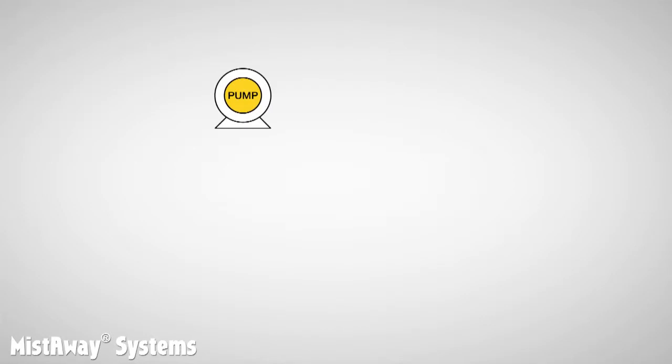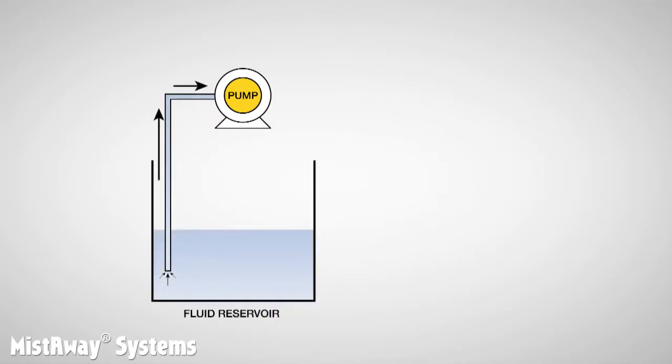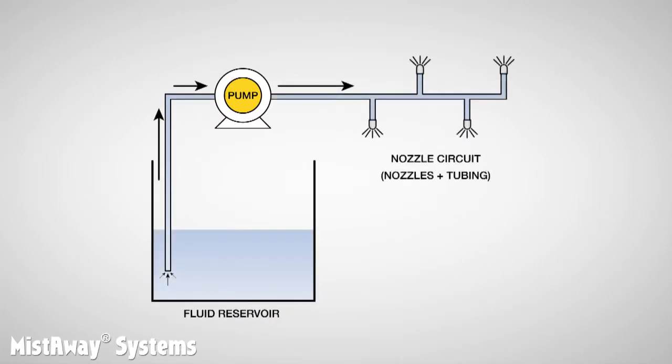Let's start by looking at a drawing of a very basic misting system. You'll notice three important components: a pump that draws fluid from a reservoir, tubing that carries the fluid, and nozzles. Together, we refer to the tubing and nozzles as the nozzle circuit.